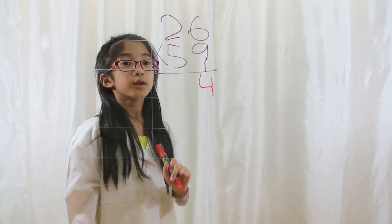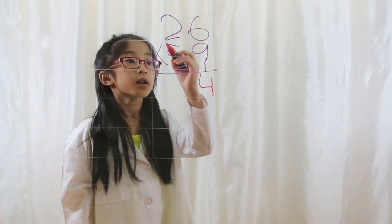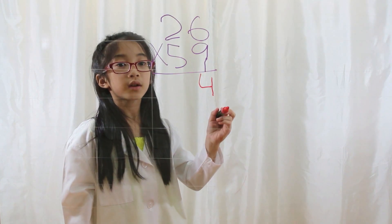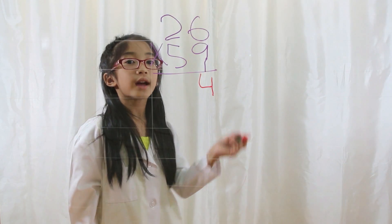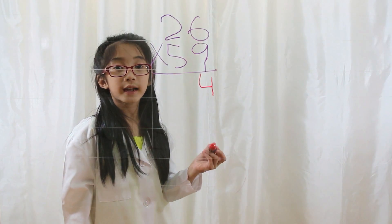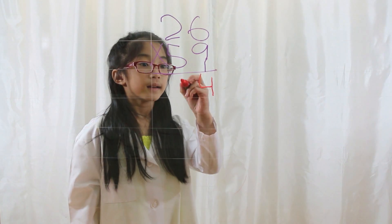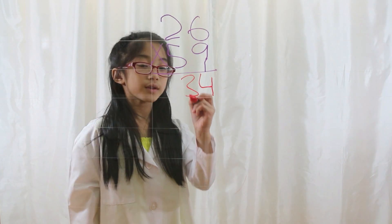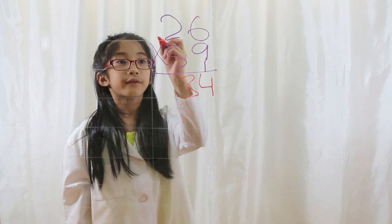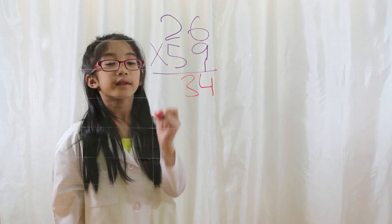Step 2. You cross multiply. 6 times 5 is 30, and 2 times 9 is 18. 18 plus 30 is 48. Now you add the 5 that you carried to 48: 48 plus 5 equals 53. Now you have to remember that there's a 34 at the end of your answer, and that you carried a 5 next to the 2 and the 5.